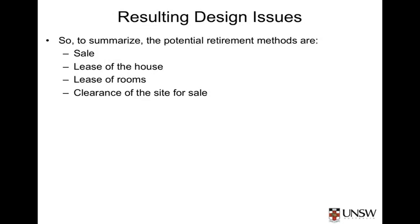Now if we just look at those options and recast them to summarise, we really only have four potential retirement methods: sale — we can sell the house outright and move to a new house; we can lease the house, going to buy a new house and leasing the current one; or lease some rooms in the house; and finally, clear the site and sell the site.